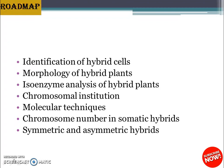The second method is isoenzyme analysis of hybrid plants. Isoenzymes are multiple forms of an enzyme catalyzing the same reaction. The electrophoretic patterns of isoenzymes are used to verify hybridity. Somatic hybrids possess specific isoenzymes of one or both parents. Many enzymes possess unique isoenzymes used for identification of somatic hybrids, such as amylase, isoperoxidase, and aminotransferase.